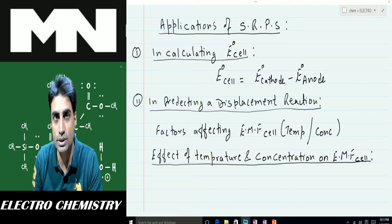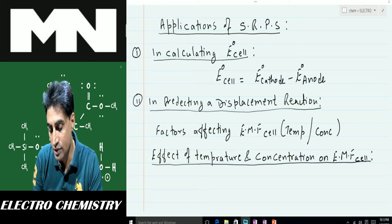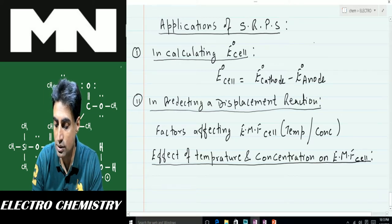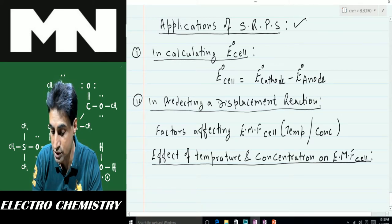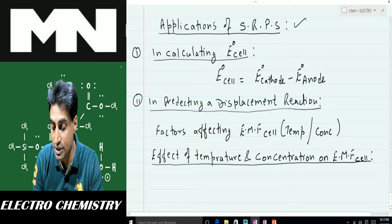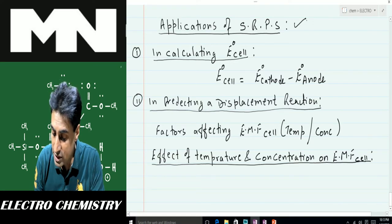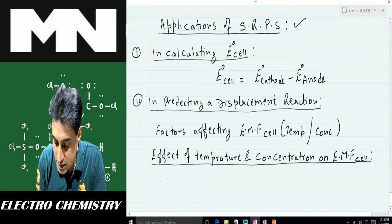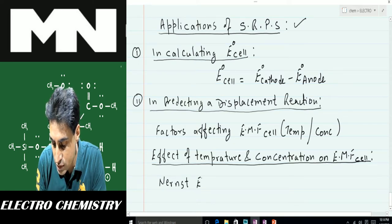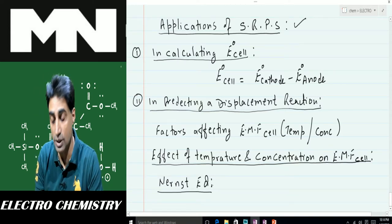Welcome again, students. In the last class we talked about standard reduction potential series and its applications. In today's class we'll be doing another topic: the effect of temperature and concentration on the EMF of a cell. Basically, we'll be talking about the Nernst equation — we'll derive it and see what this equation is all about.